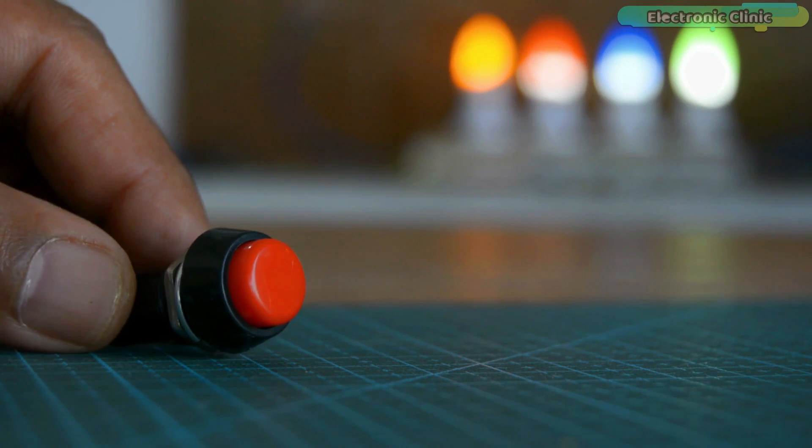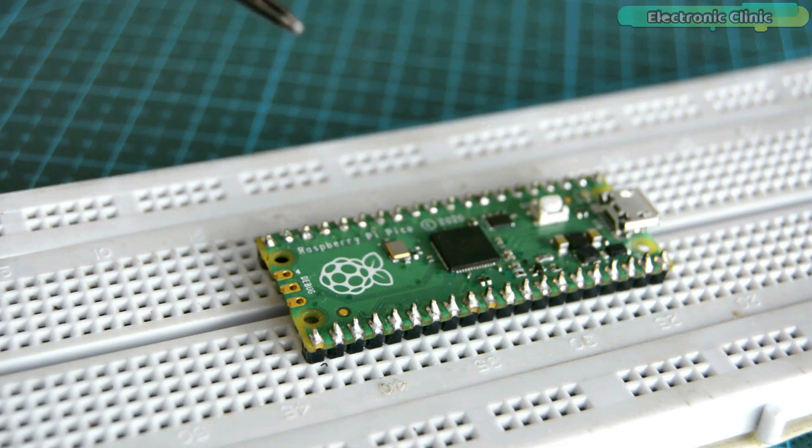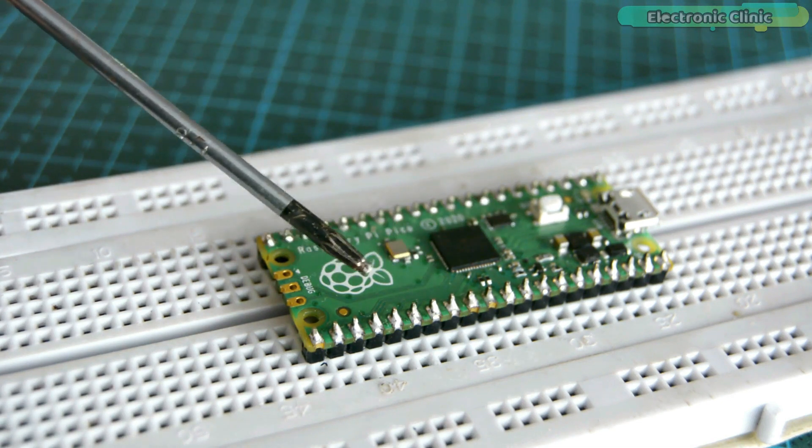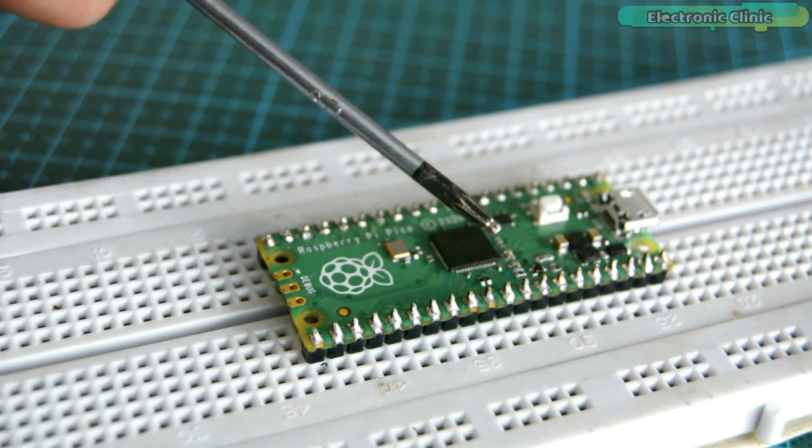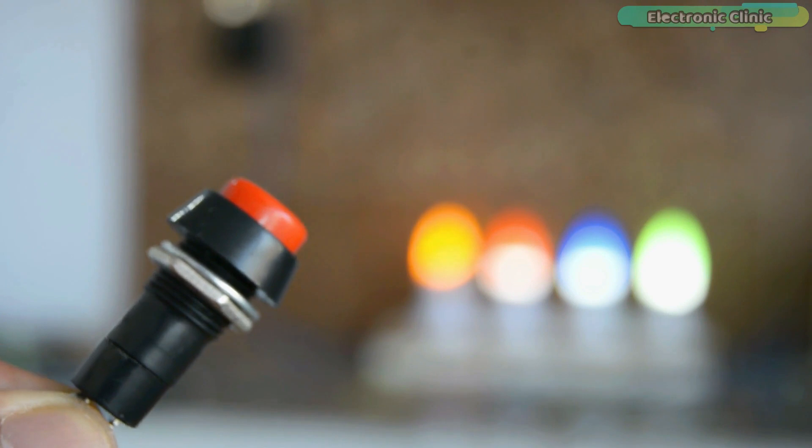In example number 4, I'm going to explain how to use a push button with Raspberry Pi Pico. The purpose of this example is to help you understand how to read a digital input on any GPIO pin of the Raspberry Pi Pico board. This is really an important example, so make sure you don't skip any information.